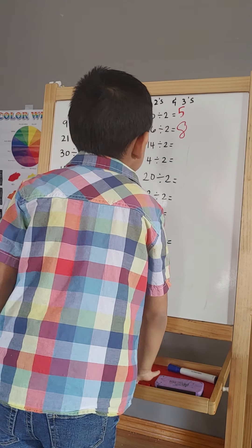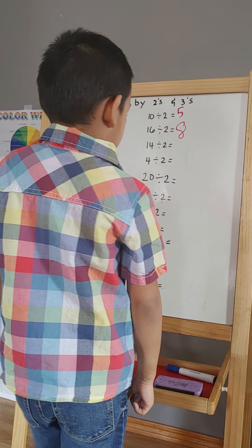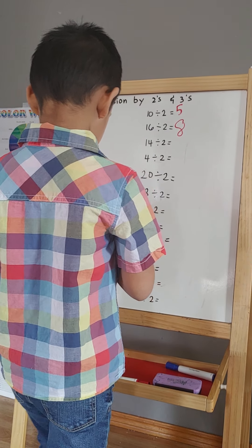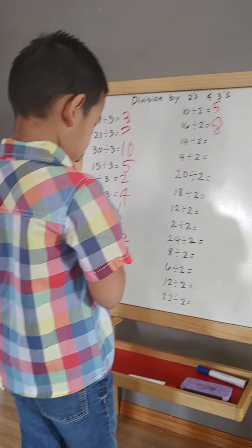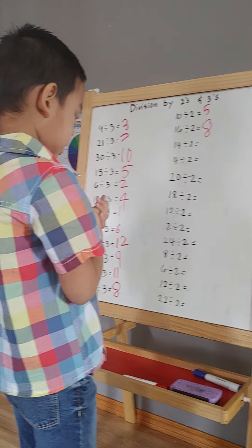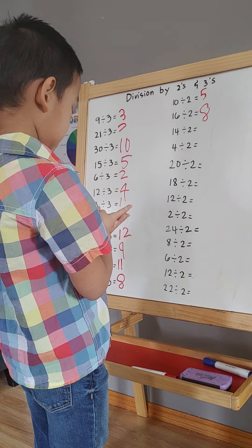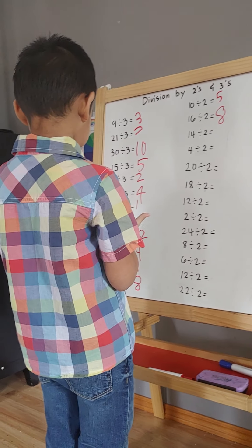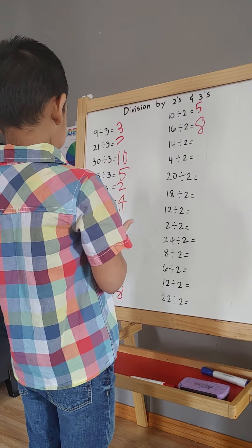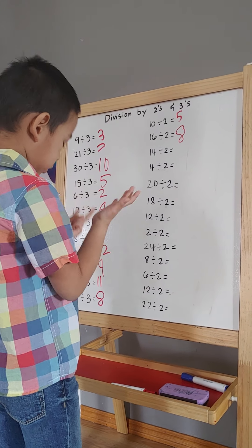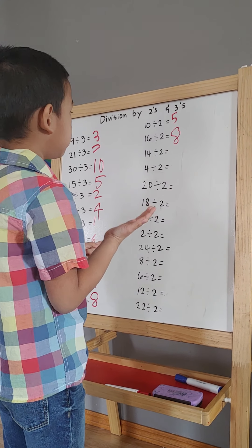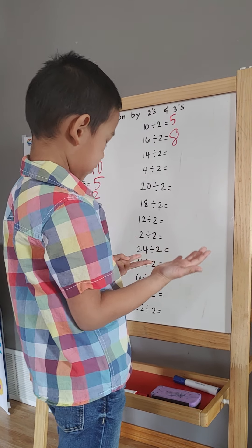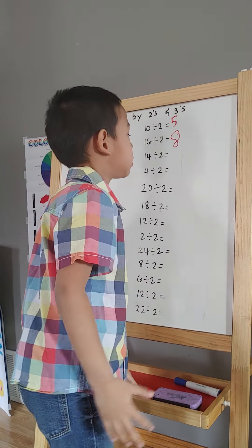13 divided by 2. So 2, 4, 6, 8, 10, 12, 14. So 7.